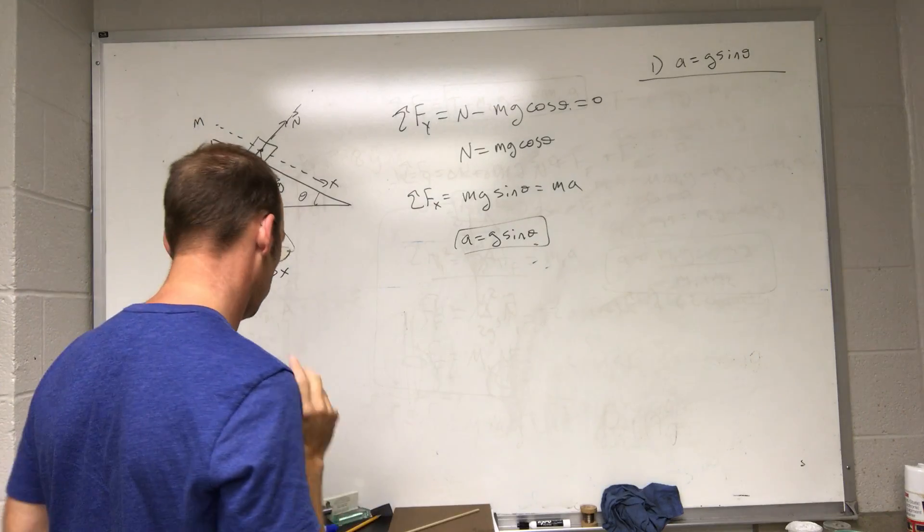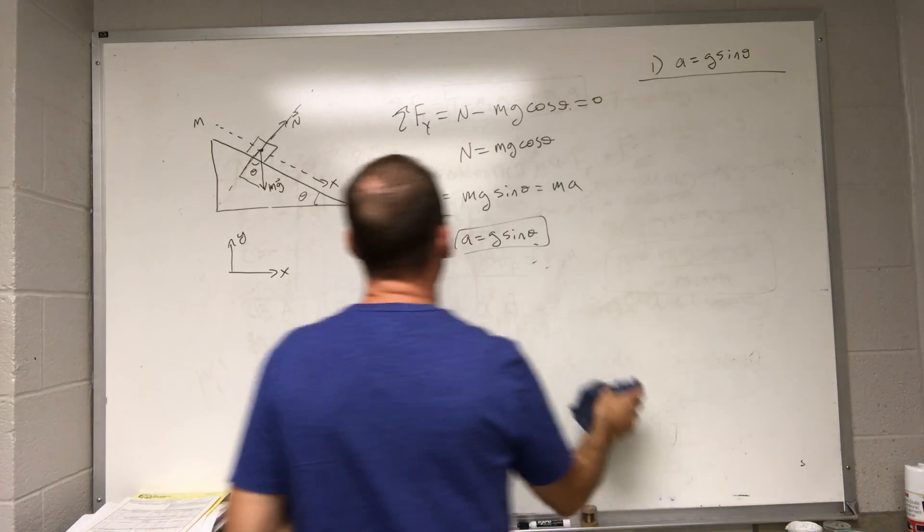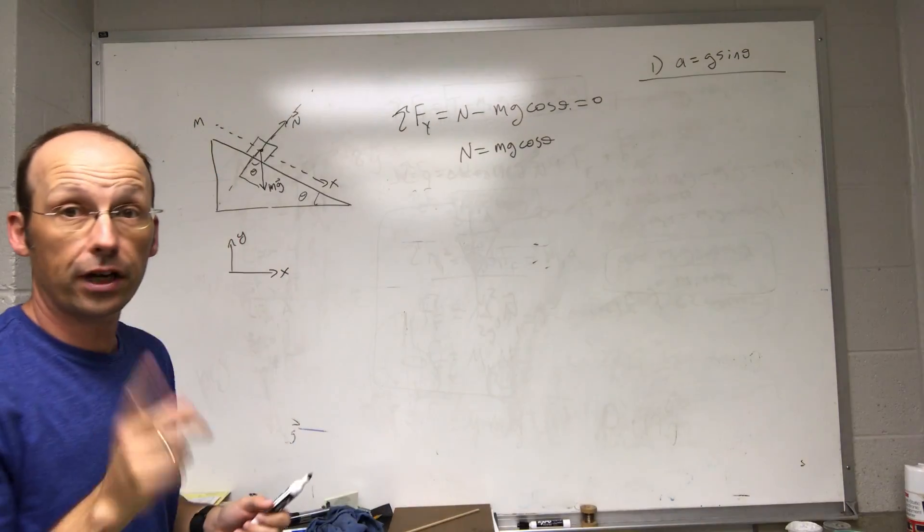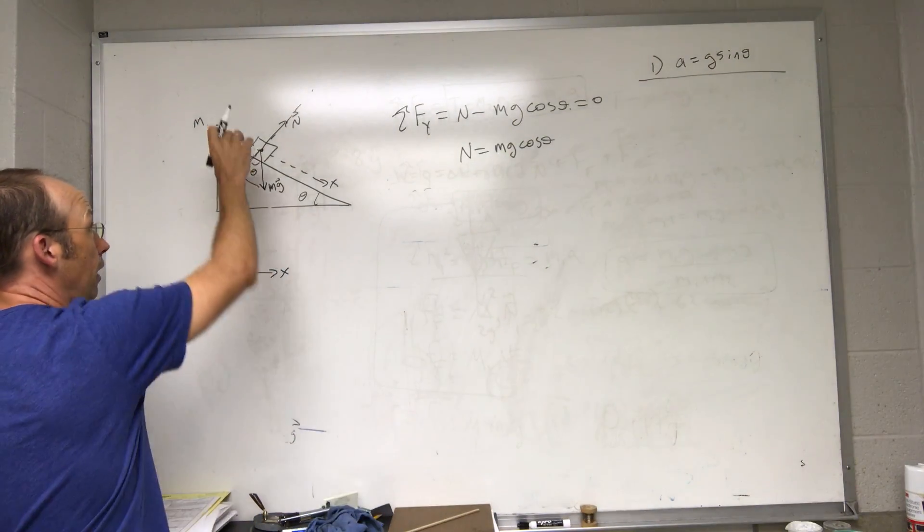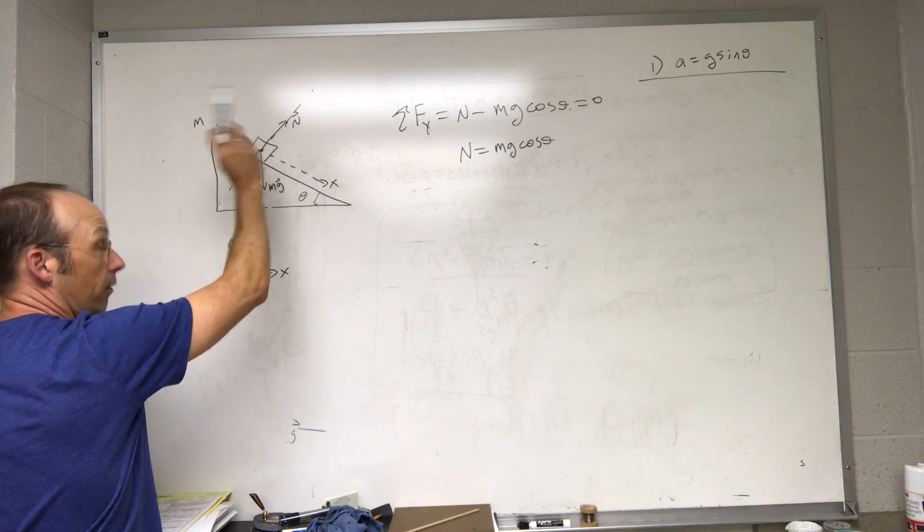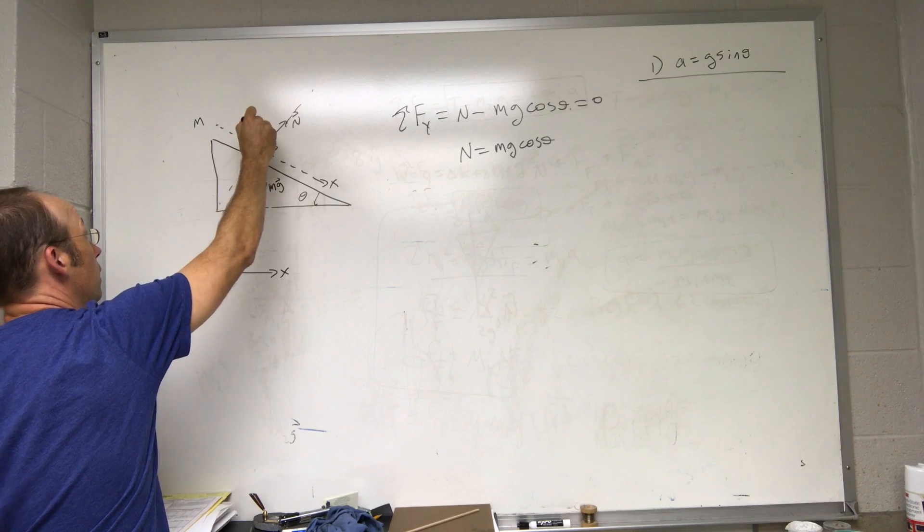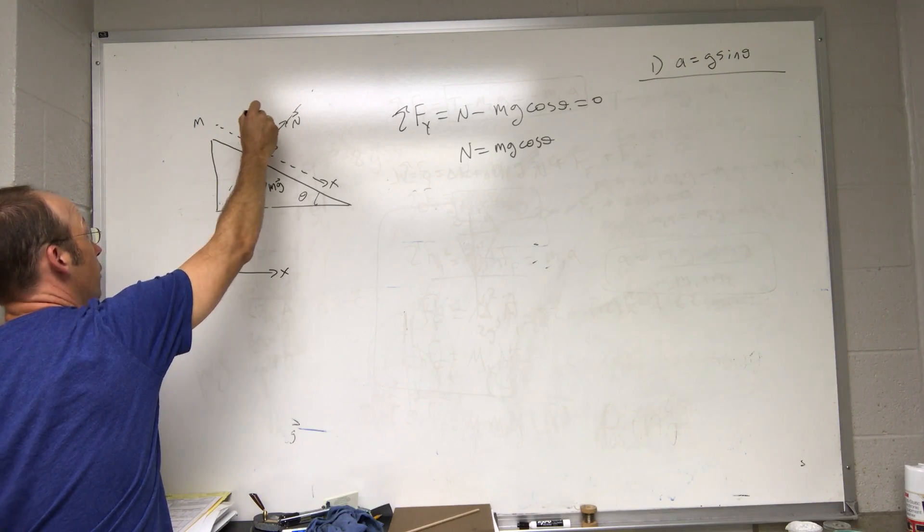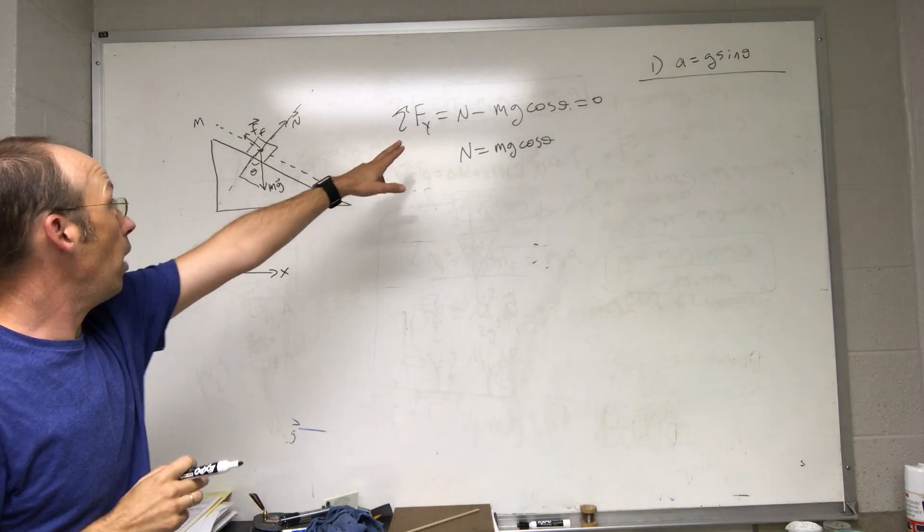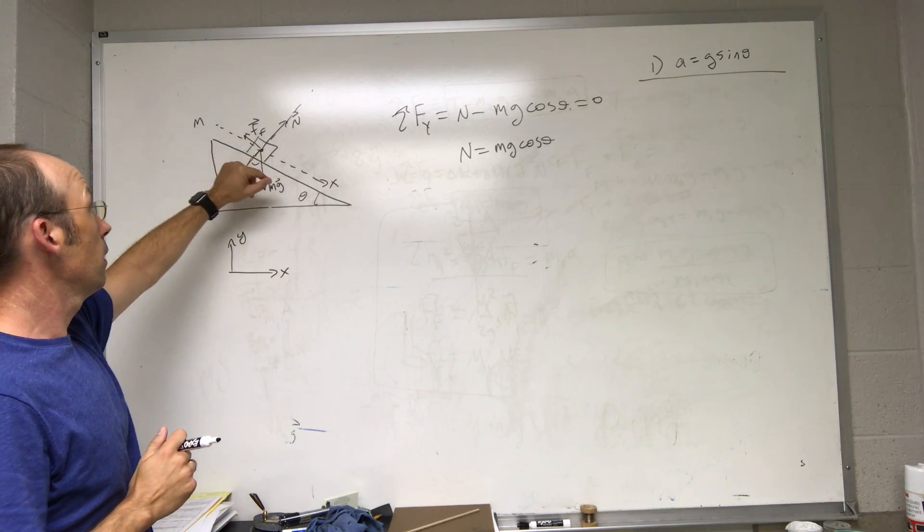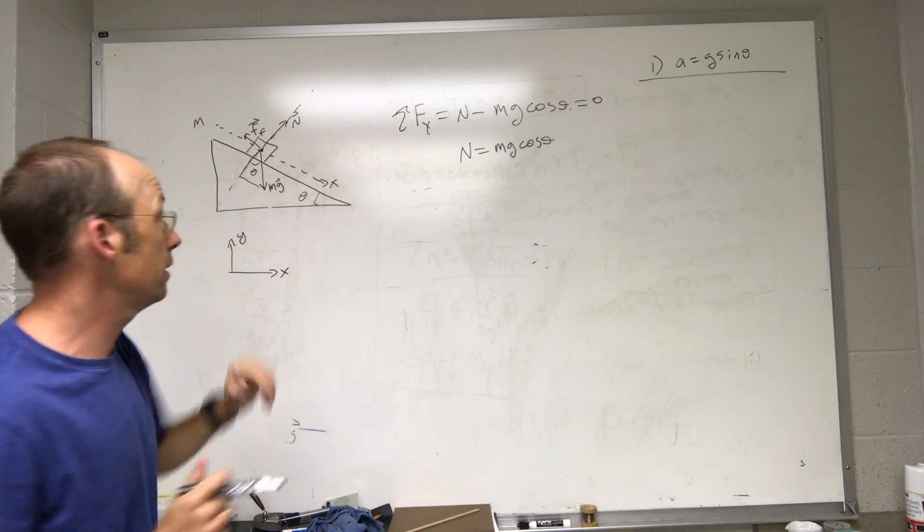Number two. Change the problem. I'm going to leave that equation like that. But now there's friction. Now it's sliding down the plane, and it's sliding, so there's a frictional force like that. It's kinetic friction. So my y equation is the same, because the frictional force is parallel to the surface. So it doesn't affect the y direction. That's the same.